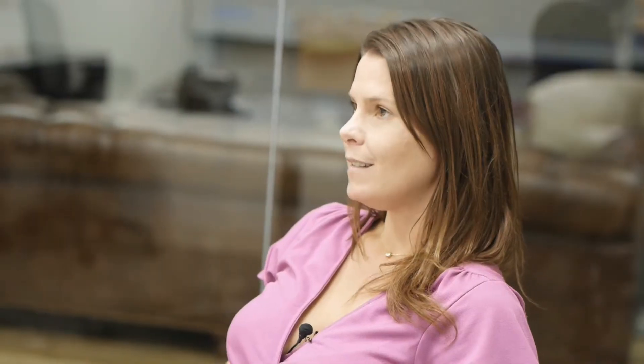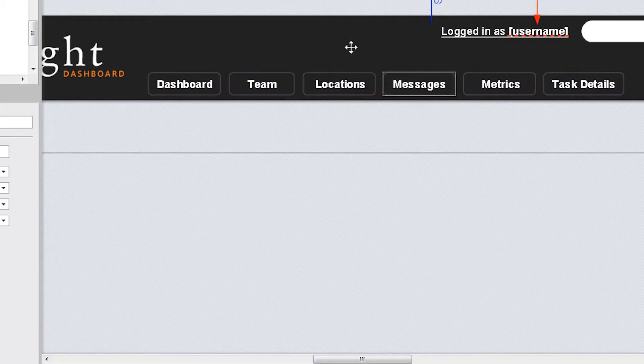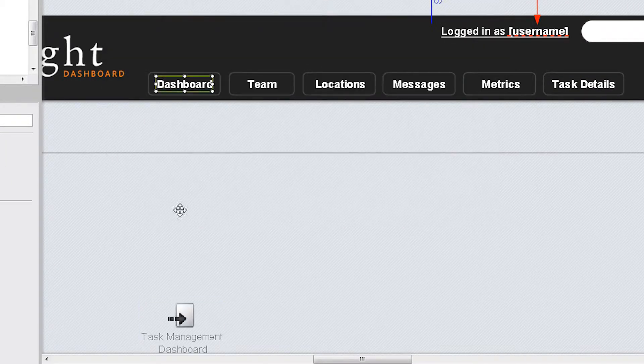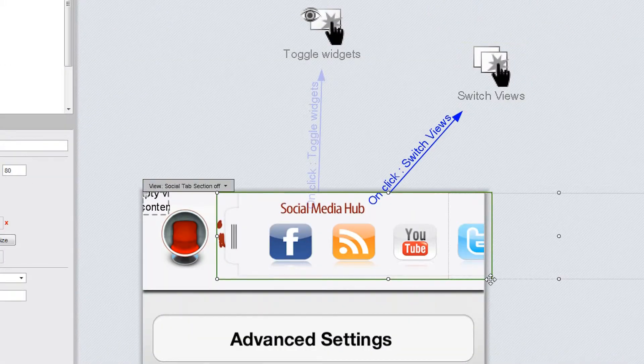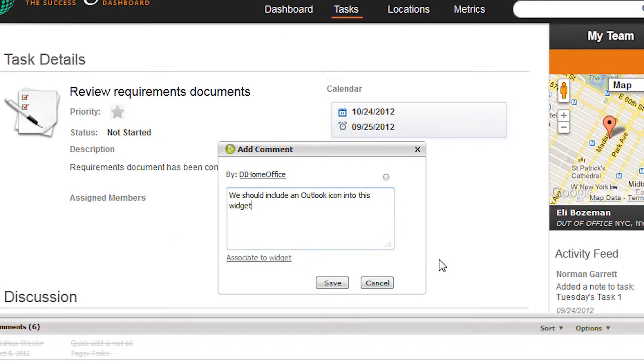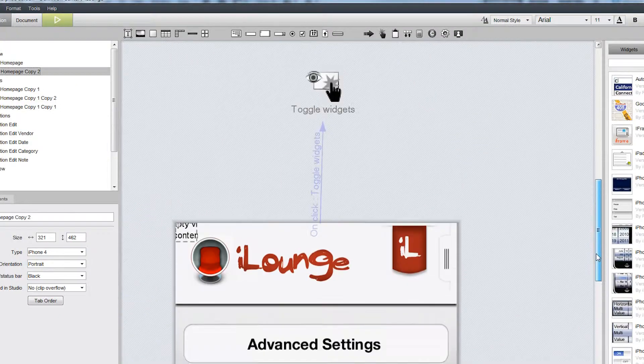If you're going to get the design right, you really need to be able to iterate through multiple design options. This is what iRise allows. You can quickly create a design, get accurate feedback, and then make changes until you get the design right.